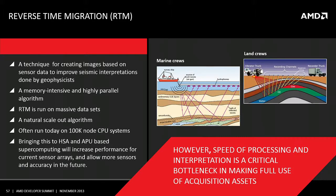Another interesting example is reverse time migration — a supercomputer application used in the oil and gas industry to search for new reserves by finding cavities under the ocean floor or land. It's a very memory-intensive, highly parallel algorithm and a natural scale-out algorithm. Putting APUs in the cloud lets you scale out to 1,000 or 30,000 nodes — versus today's 100,000-node CPU systems. Bringing this to HSA-enabled APUs will enable current workloads to run faster and workloads that today take five days to finish in hours, giving competitive advantage in a very competitive field.